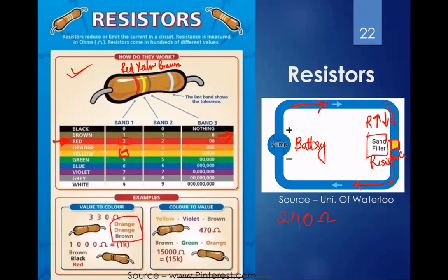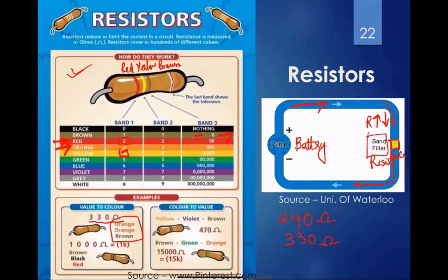Another example: orange, orange, brown. Orange is 3, orange again is 3, and brown means add one zero — so that's 330 ohms. The last band represents tolerance: gold means plus or minus 5%, silver means plus or minus 10%. That's how the real value of the resistor may vary slightly from its nominal value.